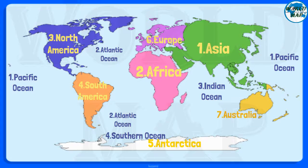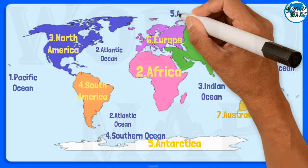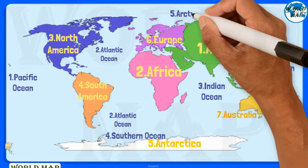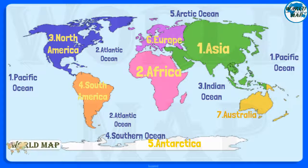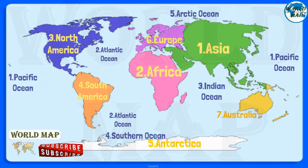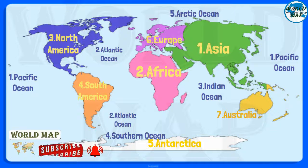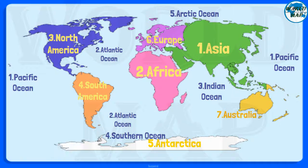Number 5: Arctic Ocean. The Arctic Ocean is the world's smallest and shallowest ocean of all five oceans. Further to this, it is the coldest and least salty ocean.